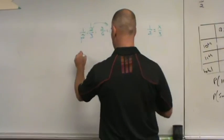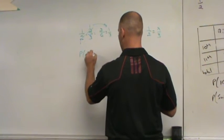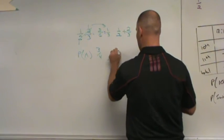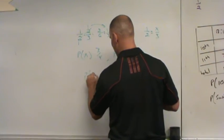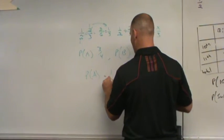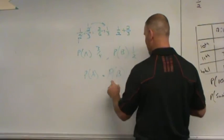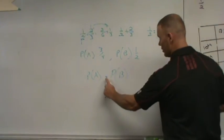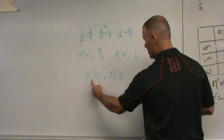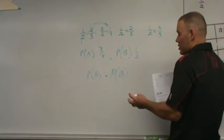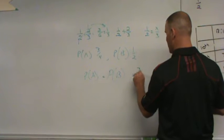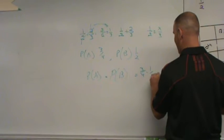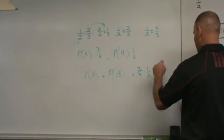When you move to number seven, number seven has the probability of A which says three-fourths. It gives you the probability of B which is one-half. And then it says probability of A, probability of B. It's asking you to multiply these. So this would be three-fourths times one-half which is three-eighths.